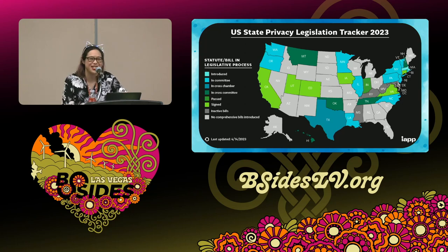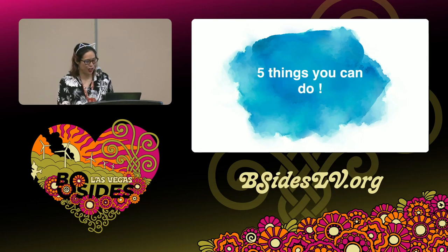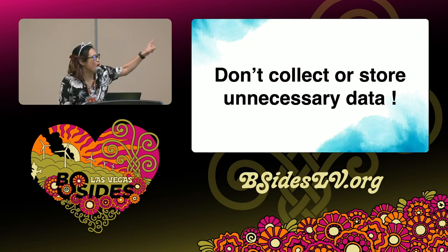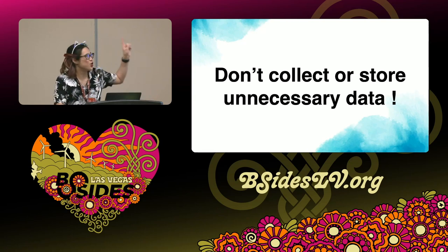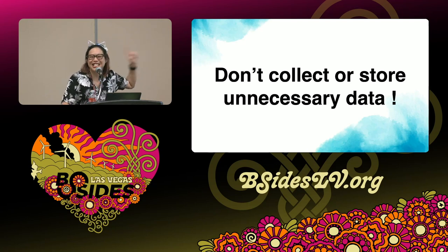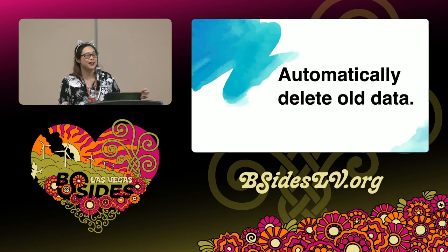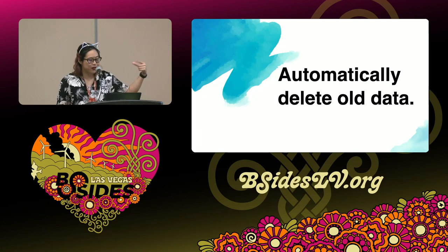So what can we do, even though this sounds very ominous? Here are five things. The first rule of PII Club is don't collect or store unnecessary data. And the second rule of PII Club is don't collect or store unnecessary data. If you remember nothing else from this talk, just don't collect or store unnecessary data — this will get you far. If you're going to be storing data, two: automatically delete old data. Create a schedule for when that data is going away — that's called a data retention policy. Most cloud storage systems like AWS have configurations to make this a scheduled thing so you can set it and forget it.